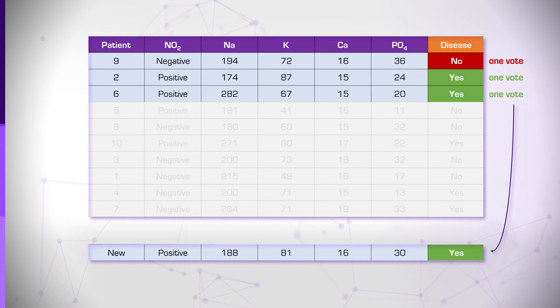But hey, maybe we can heal her with some meth. See, actually, this patient, who doesn't have a kidney disease, is much closer to our new patient. If that's so, maybe we should also consider proximity as a factor in decision-making by weighing the vote according to distance.